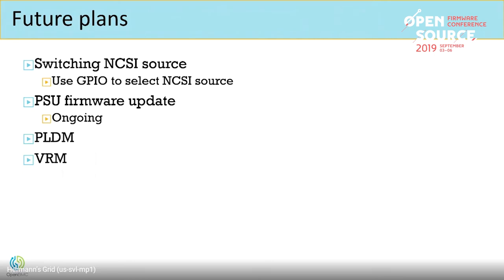We will do some more work on OpenBMC. The first is switching NCSI source — the NCSI can use the OCP network or PCIe network card, configured by a GPIO. Currently OpenBMC does not have this feature, but other systems may share this hardware design, so completing it could benefit others. INSPA is also working on PSU firmware update with some progress already. Additionally, INSPA is interested in working on PRDM and BIM, which they are doing now.